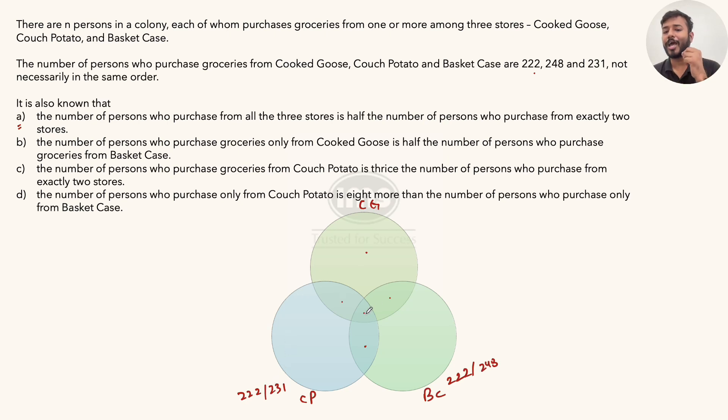Now, how to proceed? See, one logic is showing here. CP's number divided by three gives exactly two. And exactly two's half is all three. Let's check for both these numbers. If 222 is CP, then exactly two would be 222 divided by 3, which is 74. And 74's half would be 37, which could be the value of all three. This is a possible case.